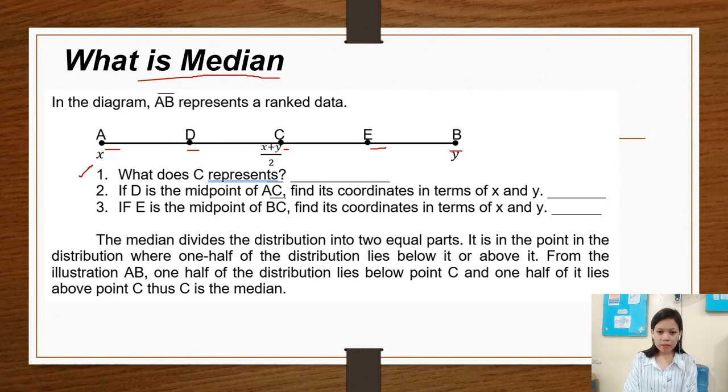So the median divides the distribution into two equal parts. It is the point in the distribution where one half of the distribution lies below it or above it. From the illustration, line AB, one half of the distribution lies below point C and one half of it lies above point C. Thus, C is the median.